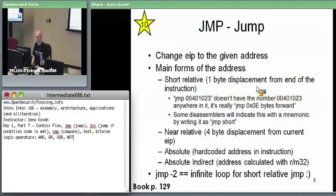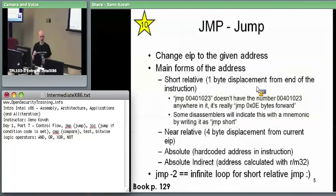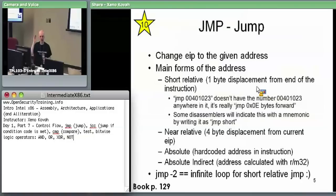A jump instruction unconditionally changes EIP to the given target address. This is different from call: call implicitly pushes the address of the next instruction onto the stack, but jump does no such thing — it just says go there now. Call is a slightly more complicated version of jump that pushes extra information so it can get back. Jump is a point of no return.